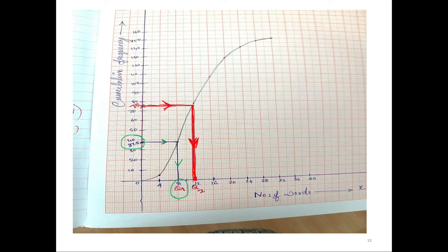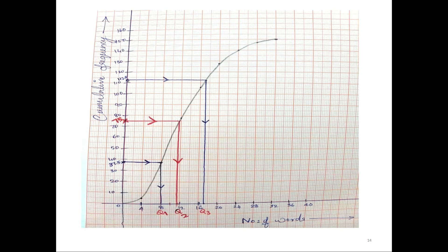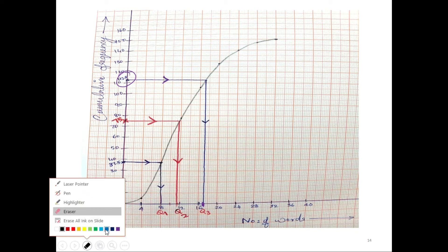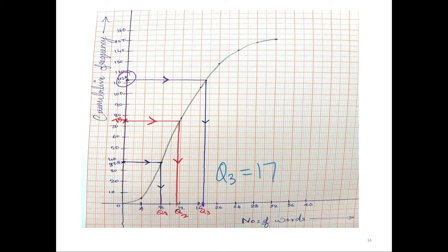I have found my Q1 and Q2. To find Q3, I'll do 3 times N over 4, which is 3 times 150 over 4, giving me 112.5. I have marked the point 112.5 on the y-axis. Again, draw the straight line, hit the S-shaped curve, and drop it down. The value of my Q3 is going to be 17.